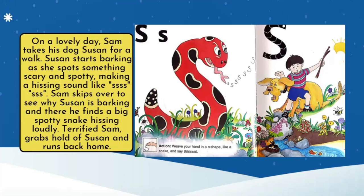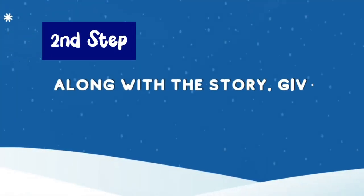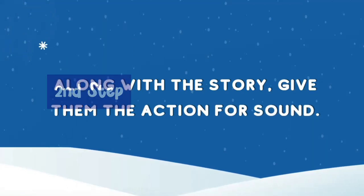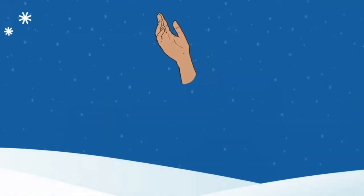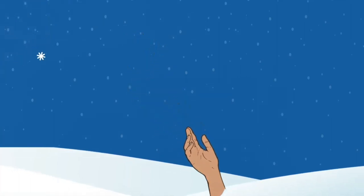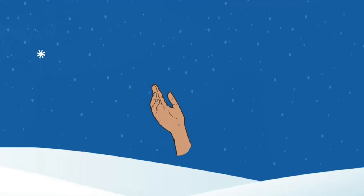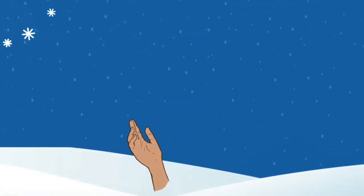This is the first part: introduce the sound with a story. The second step is, along with the story, give them the action for the sound. Move your hand in the shape of ssss like this. Move your hand and say the sound — ssss. Have children take out this sound while moving their hand.